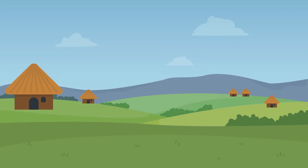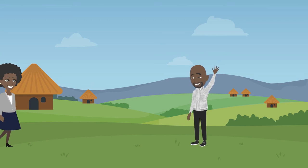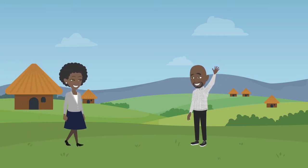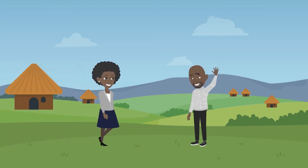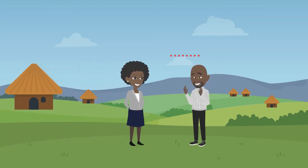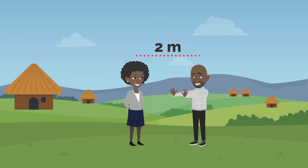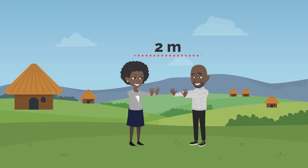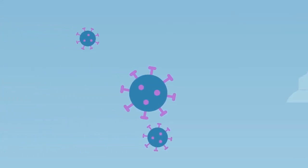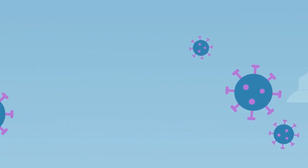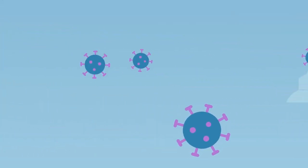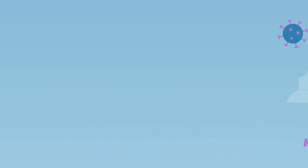For physical distancing, the U.S. Centers for Disease Control and Prevention, or CDC, recommends two meters, which is about two arms' length apart. The further you stand from others, the less likely the virus can travel through the air and land on your eyes, nose or mouth.